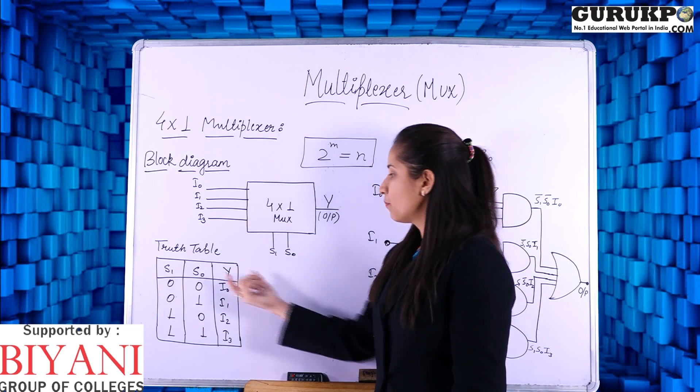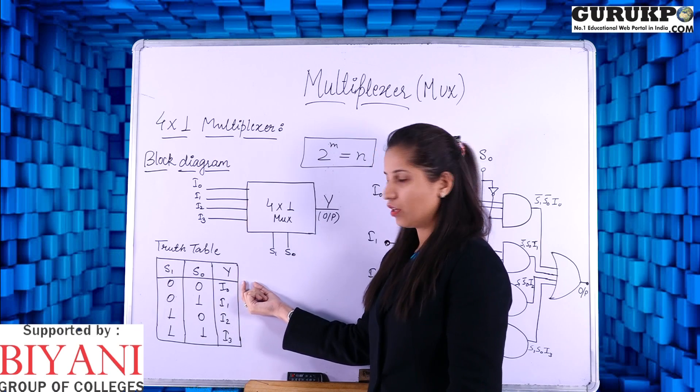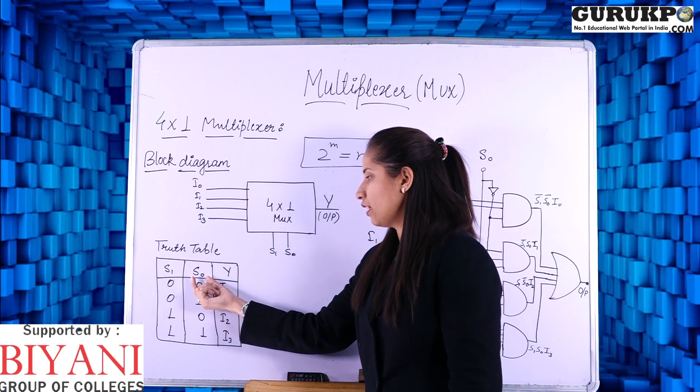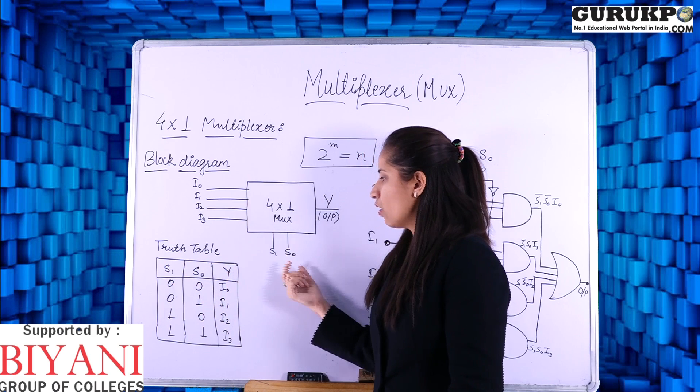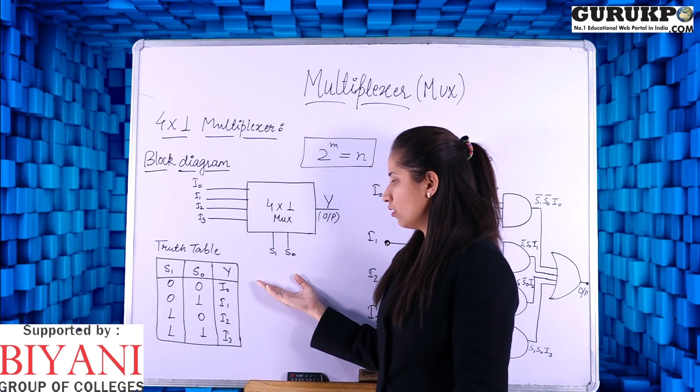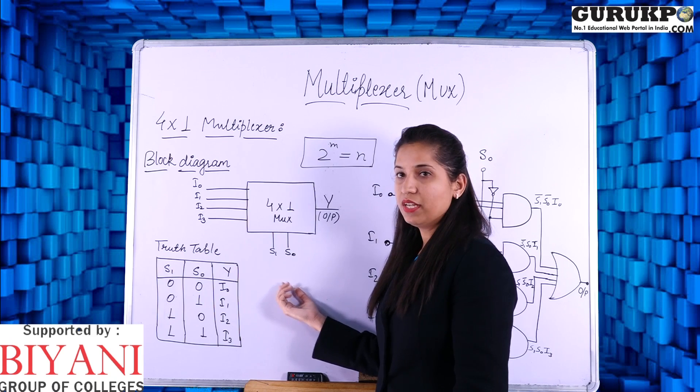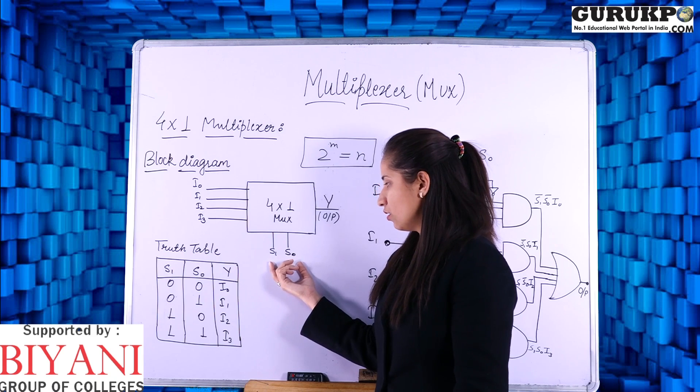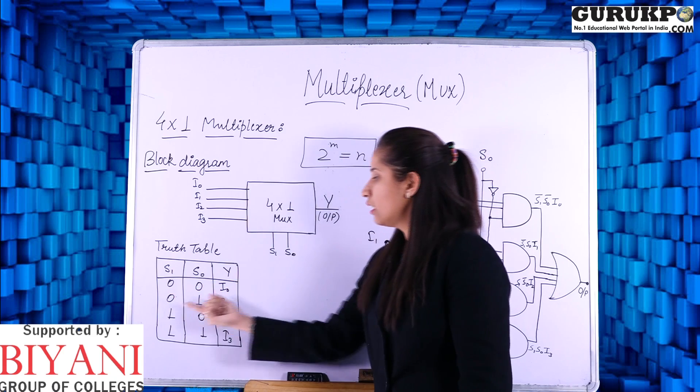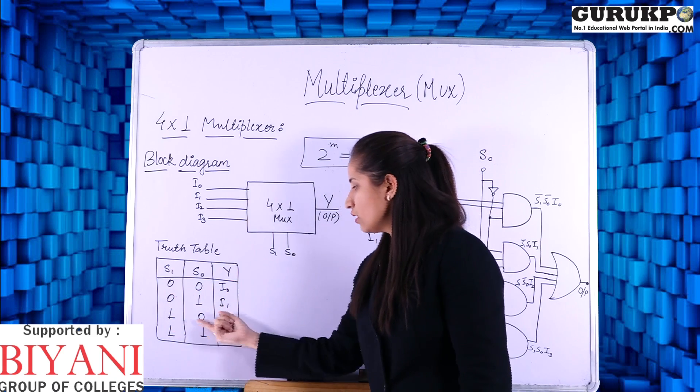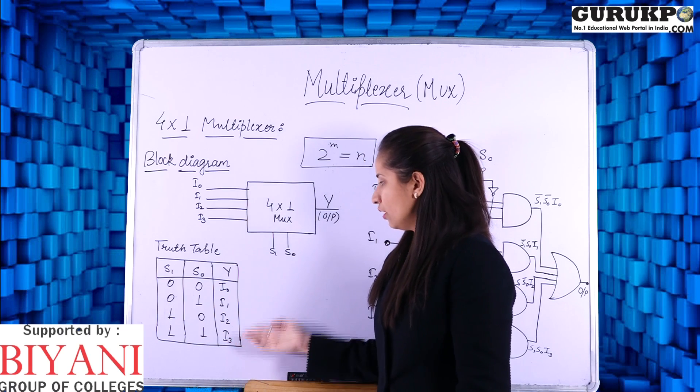Truth table for this is S1, S0, Y. S1 and S0 we will take it as inputs in the truth table and Y is the output. As I told earlier that input and output will be dependent on the selection lines. If you have 0, 0 then you will get I0. 0, 1 gives I1. 1, 0 gives I2 and 1, 1 you will get I3.